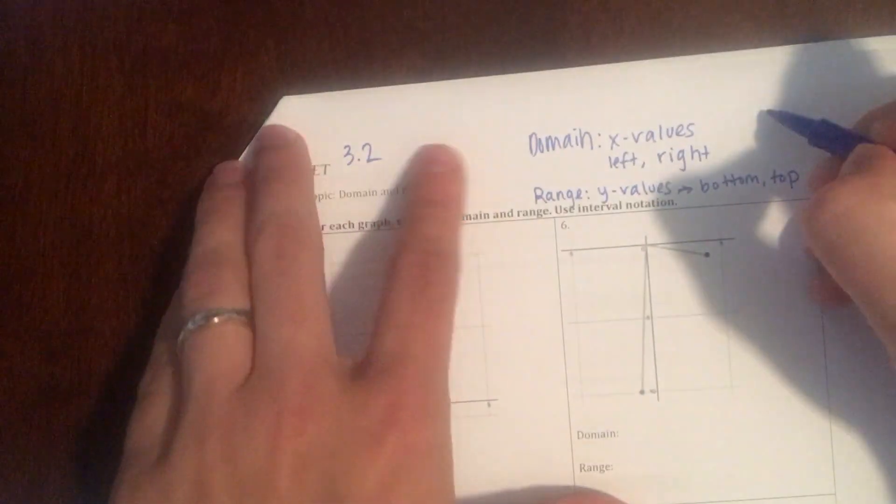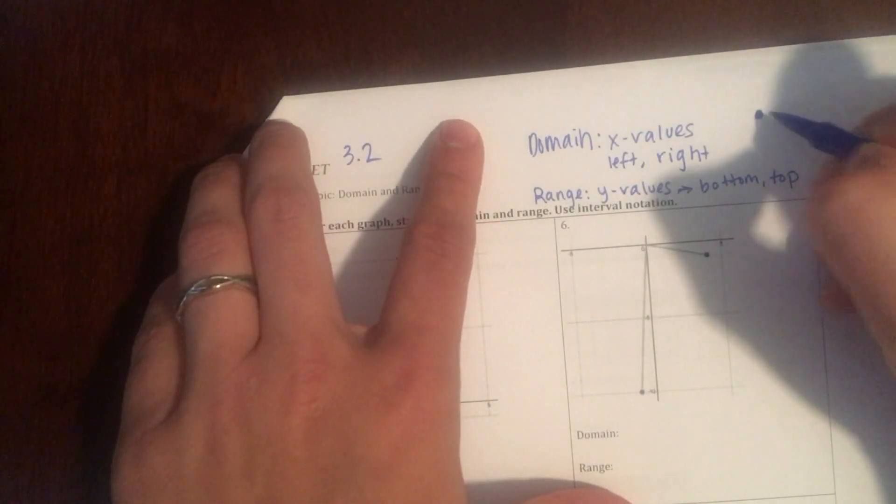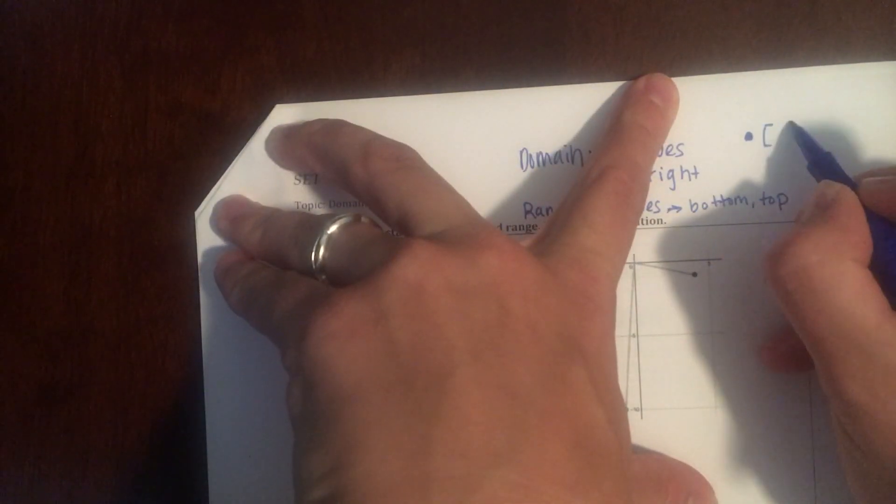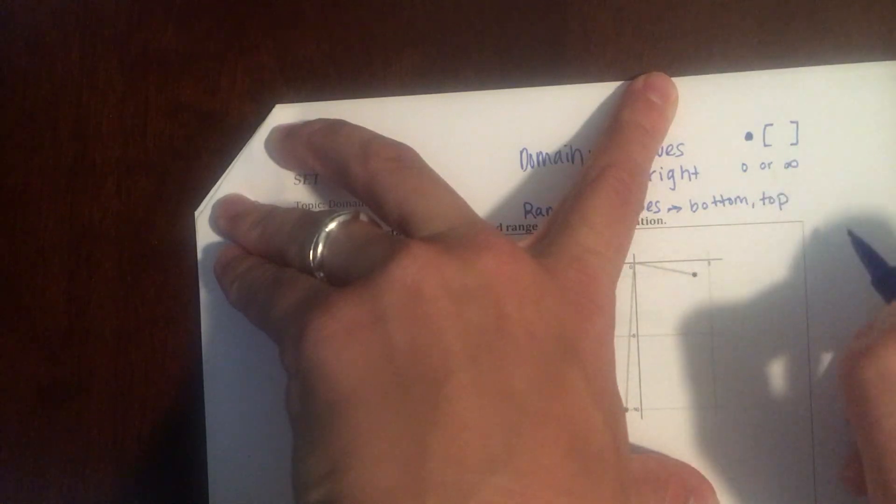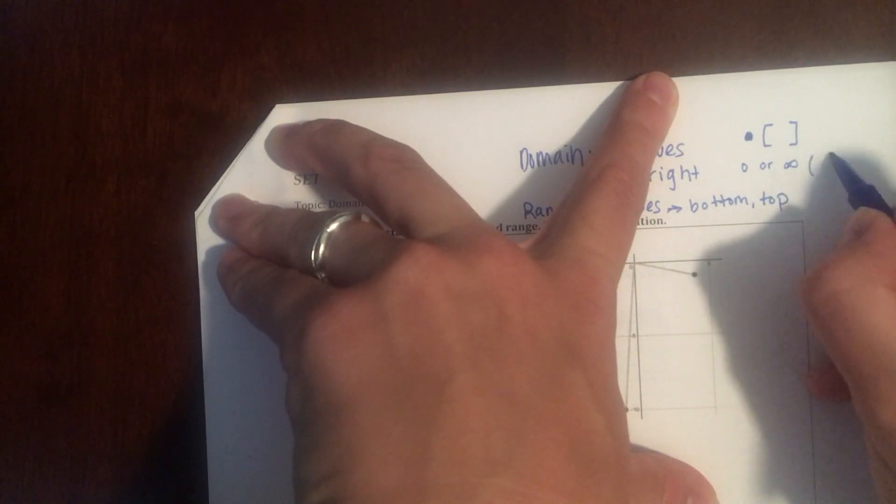When we have a closed dot, we use brackets. When we have an open dot or infinity, we use parentheses.